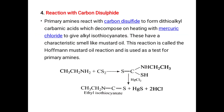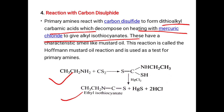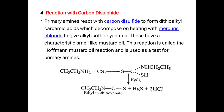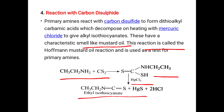Next, reaction with carbon disulfide (CS₂). When a primary amine reacts with carbon disulfide, it forms a dithiocarbamic acid. This then reacts with mercury(II) chloride (HgCl₂) on heating to give an alkyl isothiocyanate, which has the characteristic smell of mustard oil. This reaction is also called Hofmann's mustard oil reaction and is used as a test for primary amines.